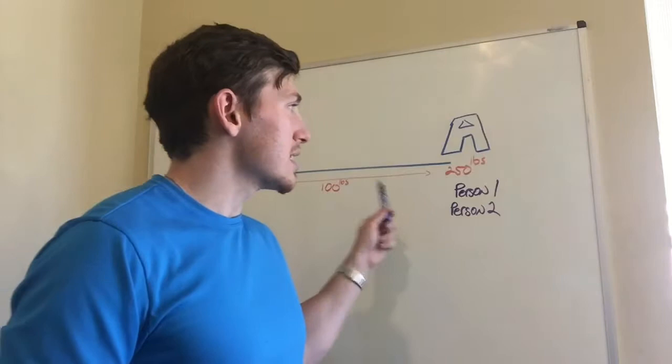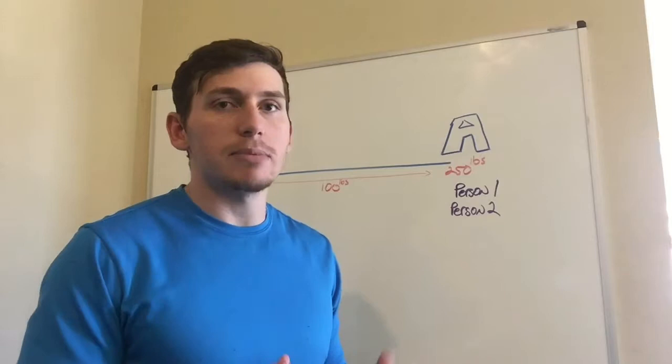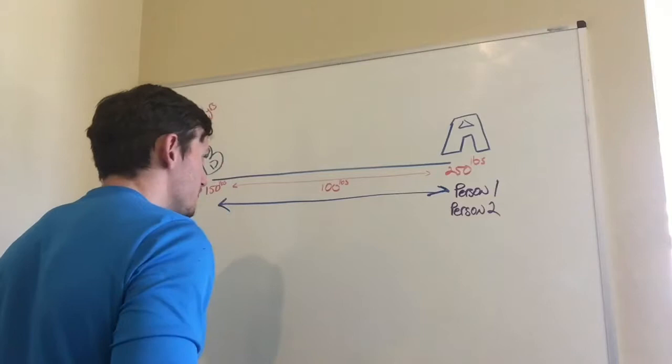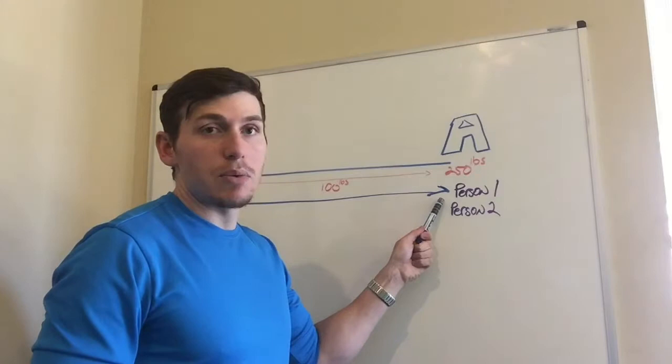We're going to spend a little bit of time talking about the difference between two different types of people. The first type of person is somebody who decides that they want to accomplish something, and in this case we're talking about 100 pounds. They do one thing. They decide they want to do it, they start and they don't stop until it's done.